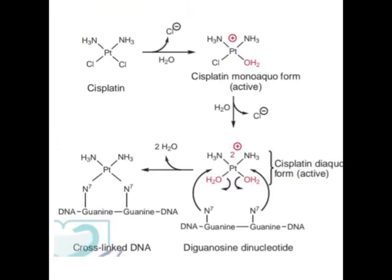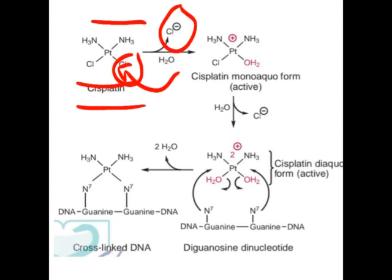One example of this organoplatinum complex is cisplatin. 'Cis' means the amine groups and chlorine atoms are on the same side. In the first step, one chlorine atom is removed and a water molecule binds to the platinum — so Cl⁻ is removed and H₂O comes in its place. This H₂O causes a positive charge on the platinum, making it an electron-deficient species, while DNA remains the electron-rich species.